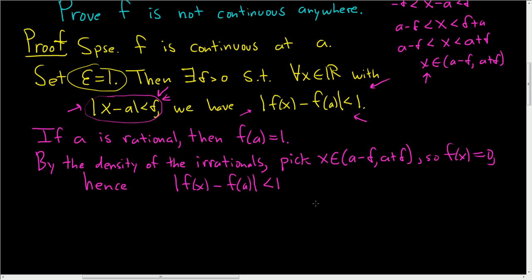we have f(x) minus f(a), and that's less than 1 because x lies in this interval. Well, f(x) is 0. So we have 0 minus f(a) which is 1. And this is less than 1. And this is just the absolute value of negative 1, and that's less than 1. So 1 is less than 1, a contradiction.